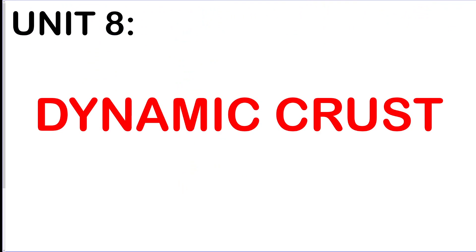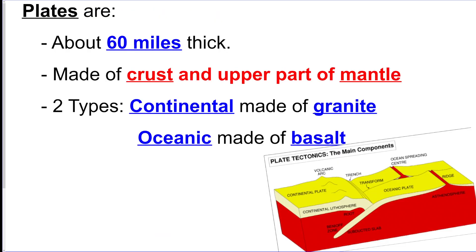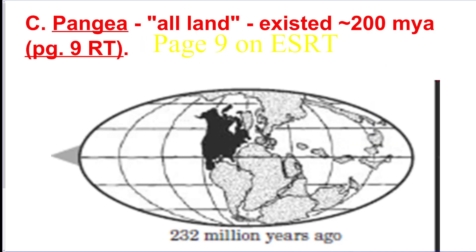We're on Unit 8: Dynamic Crust — this is going to be the shortest part. So, plate tectonics: the lithosphere, or rock layer, is broken up into pieces called tectonic plates, which are giant pieces of rock that float on top of warmer, soft rock below. The plates are about 60 miles thick, made of crust and part of the mantle. Continental crust is made of granite, and oceanic crust is made of basalt. Pangea means all the land masses on Earth were once connected.